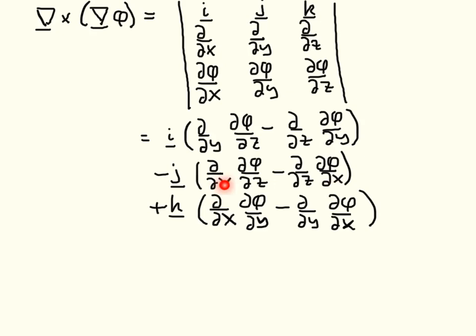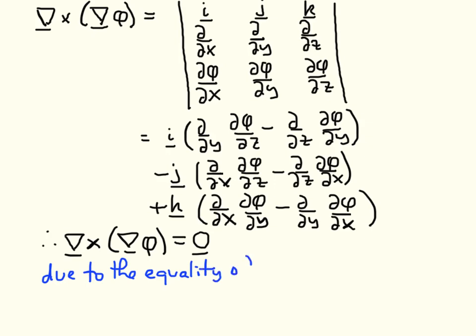You can check explicitly that exactly the same occurs here, and exactly the same thing occurs here. Therefore, the curl of the gradient of phi is equal to 0. If you wish, you could make it clear that it's a vector by underlining it, due to the equality of mixed partial derivatives.